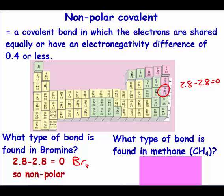It asks what type of bond is found in methane. Methane looks like this. Carbon is 2.5 and hydrogen is 2.1. You do not need to multiply 4 times 2.1 because we're looking at each bond individually.